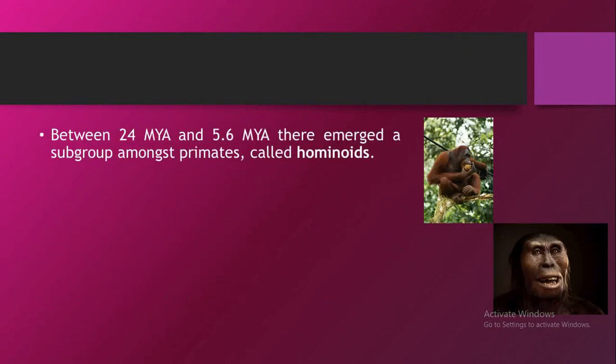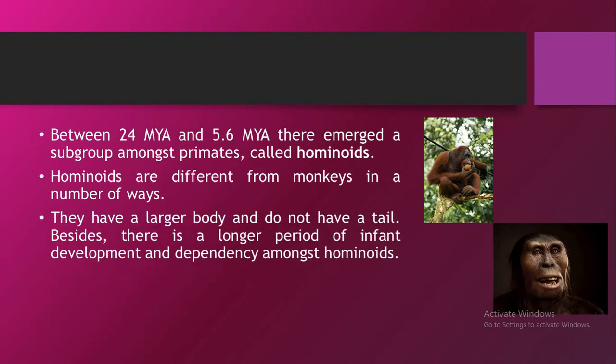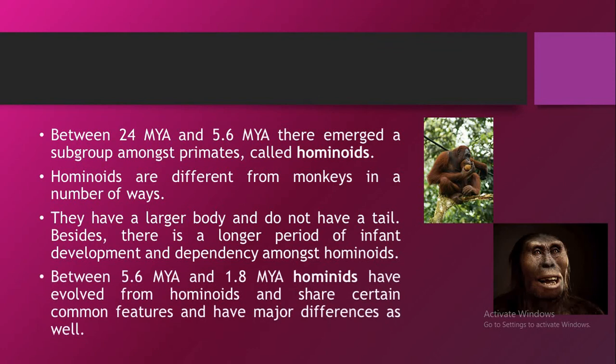Between 24 million years ago and 5.6 million years ago, there emerged a subgroup among primates called hominoids. Hominoids are different from monkeys in a number of ways. They have a larger body and do not have a tail. Besides, there is a longer period of infant development and dependency amongst hominoids. Between 5.6 million years and 1.8 million years ago, hominids evolved from hominoids and share certain common features, but have major differences as well.